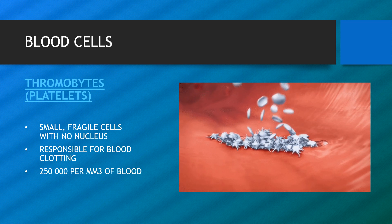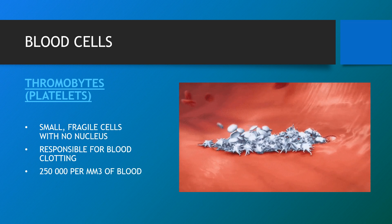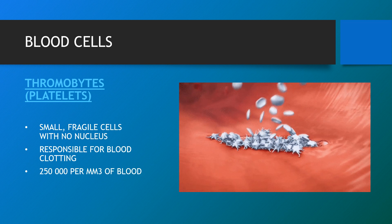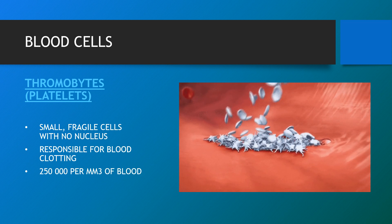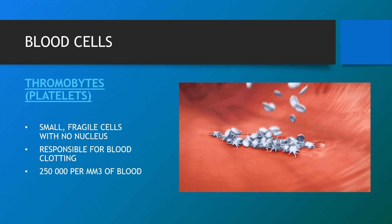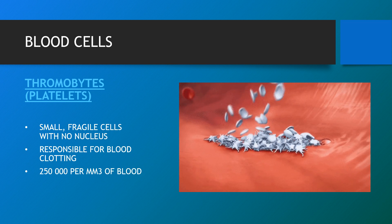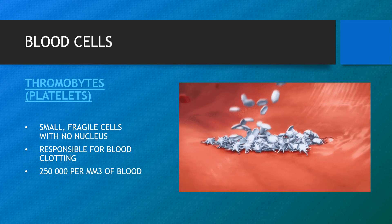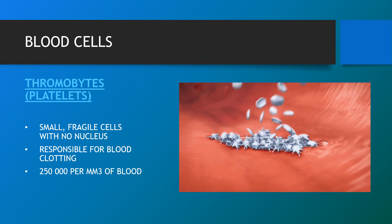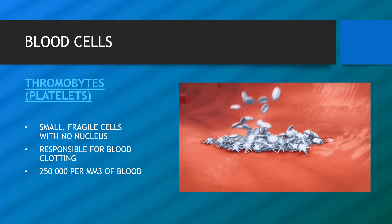Platelets, also called thrombocytes, are small fragile cells with no nucleus and are a component of blood whose function, along with coagulation factors, is to react to bleeding from blood vessel injury by clumping, thereby initiating a blood clot.